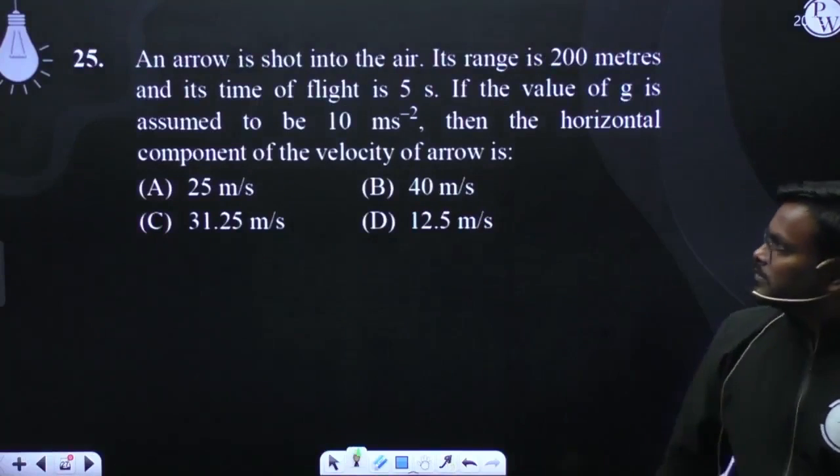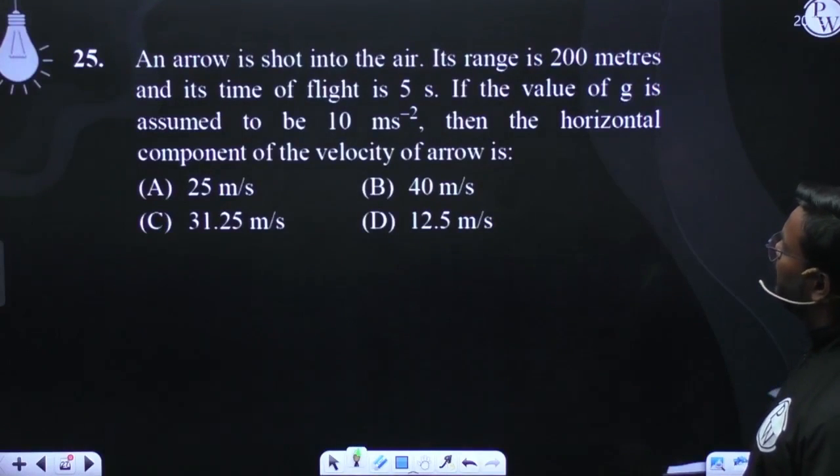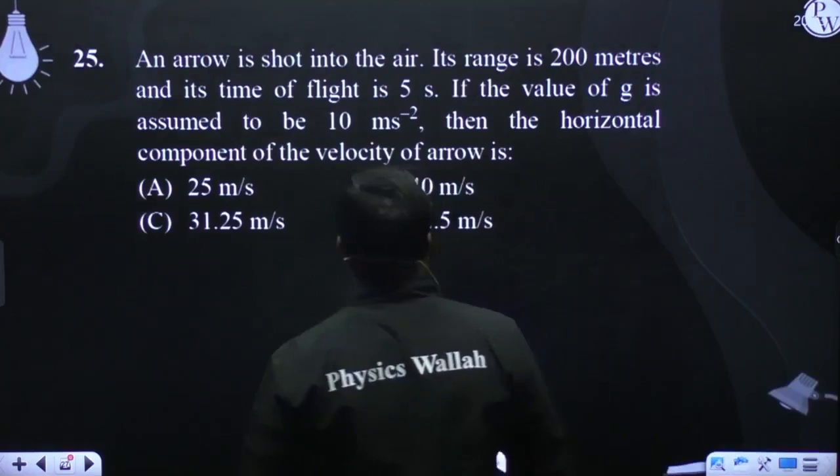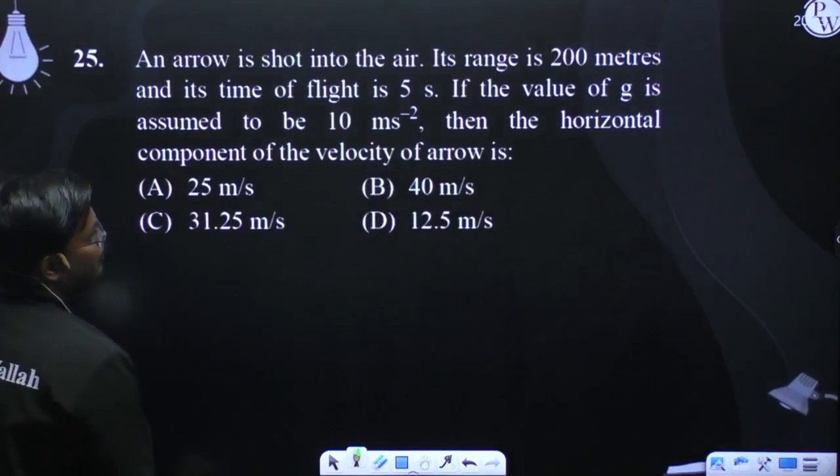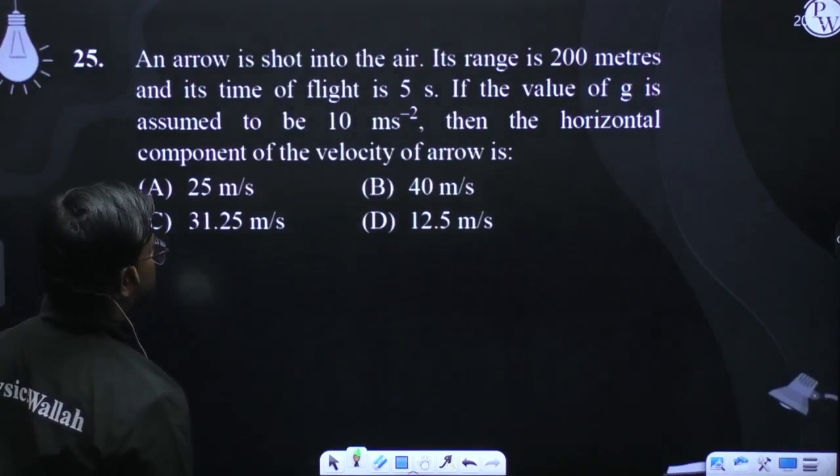An arrow is shot into the air. Its range is 200 meters and its time of flight is 5 seconds. If the value of g is assumed to be 10 meters per second squared, then the horizontal component of the velocity of arrow is: